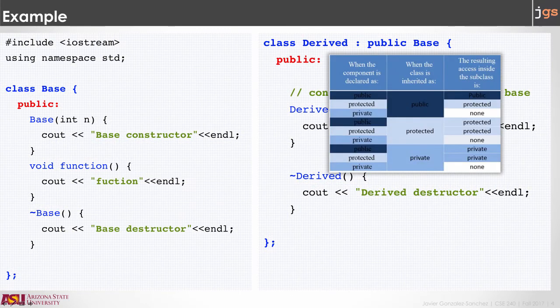When you do public inheritance, what is going to happen is that all the public and protected members in the base class are going to be public and protected also in the derivative class. And you do not inherit the private members.